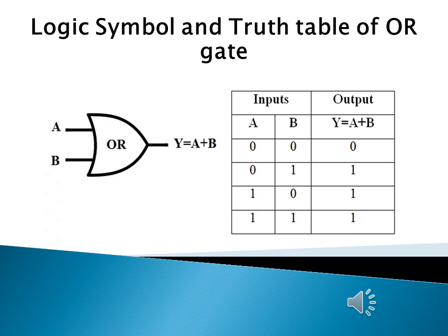In the truth table, we have A and B as the two inputs and Y equals A plus B as the output. When both inputs are zero, the output is also zero — meaning if both inputs are low, we have a low output. If one input is low and the other is high, we have a high output. It is clear from the truth table that for the OR gate, the output is high if any or all inputs are high. The only way to get a low output is by having all inputs low.